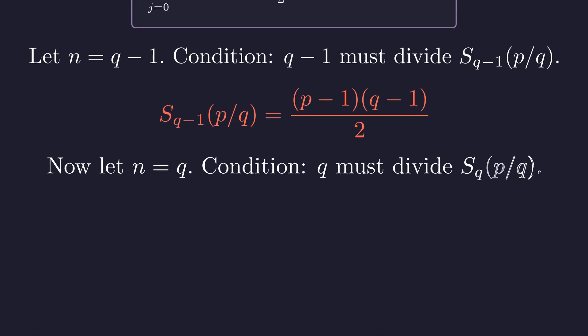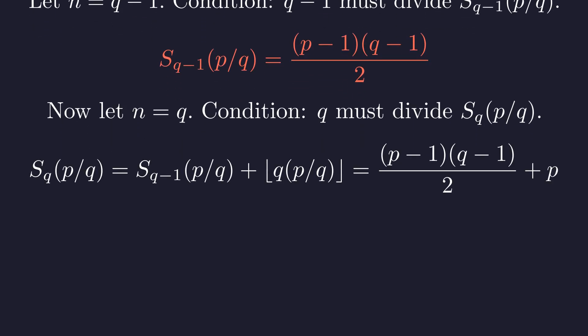Now let's test the next integer, n equals q. The sum up to q is the previous sum plus the term for j equals q, which is the floor of p or just p. We need q to divide this expression. Let's see what this implies by analyzing it modulo q.